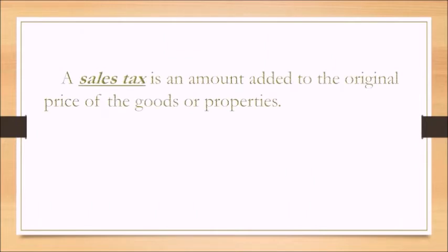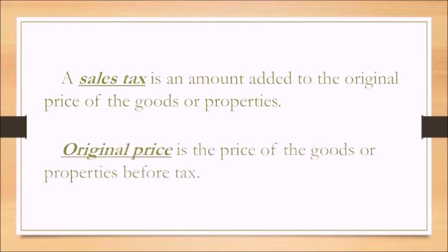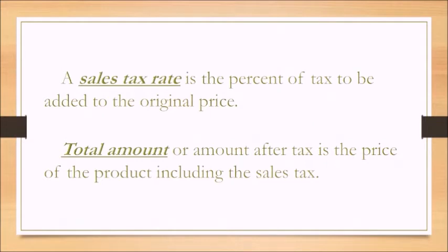A sales tax is an amount added to the original price of the goods or properties. Original price is the price of the goods or properties before tax. A sales tax rate is a percent of tax to be added to the original price. And total amount or amount after tax is the price of the product including the sales tax.